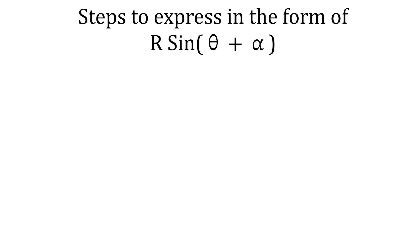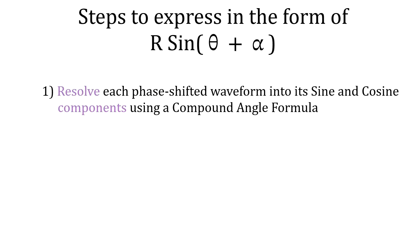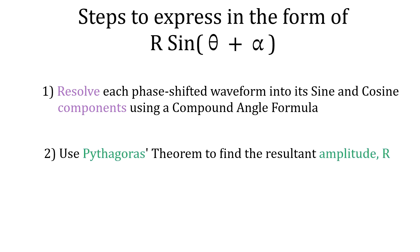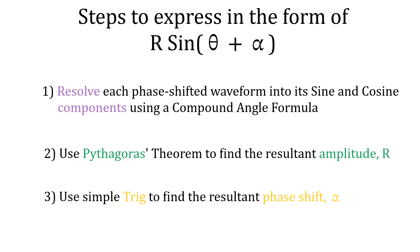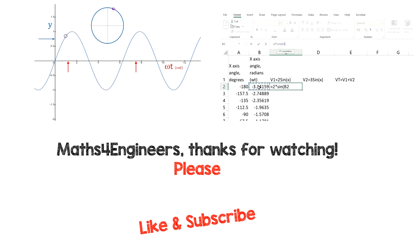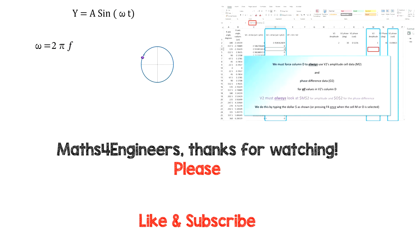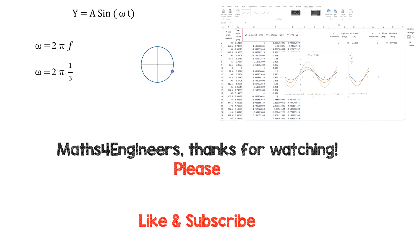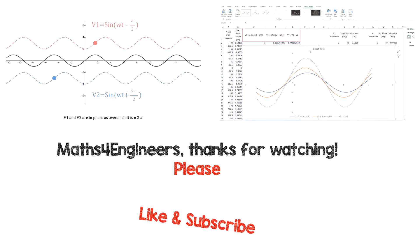As a recap: step one, resolve phase-shifted waveforms into sine and cosine components using the compound angle formula — only needed if they have a phase shift. Step two, use Pythagoras's theorem to find the resultant amplitude r for v3, and use tan to the minus one to find v3's phase shift alpha. Thanks for watching — like and subscribe and check out the other videos on omega and graphing using Excel.